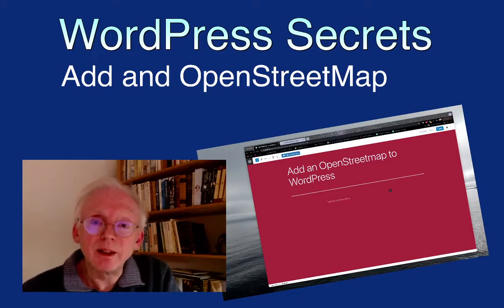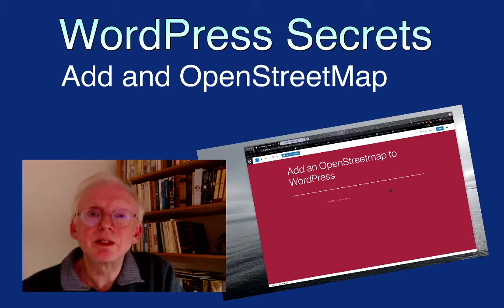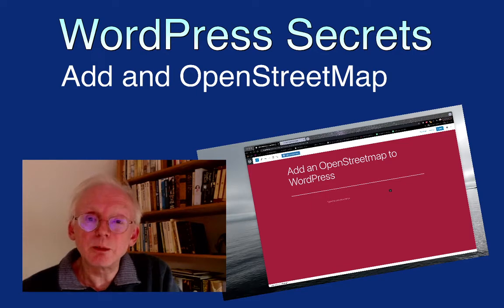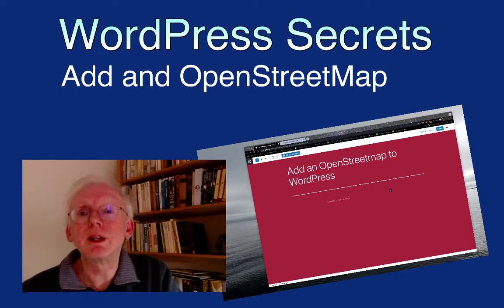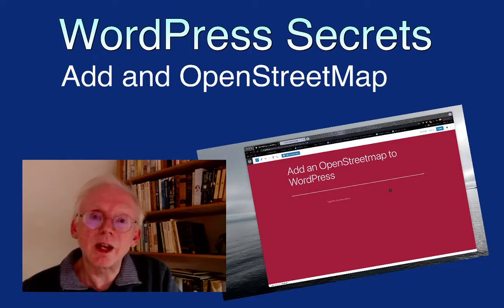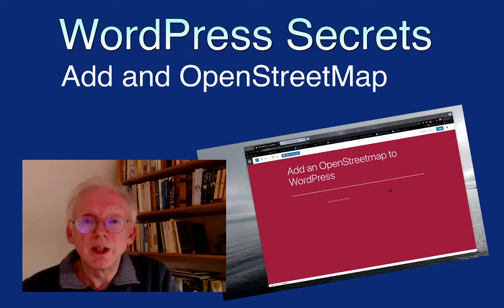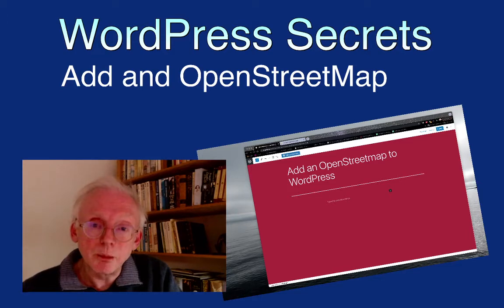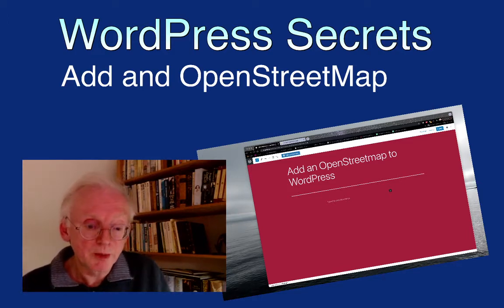Hi, my name is Peer and this is yet another WordPress secrets video. Whenever you want to add something to WordPress and there is no plugin for it, you can always add a little bit of HTML and then you can do the trick. So here we will add an OpenStreetMap simply by adding some HTML to a WordPress page or post. Let's start.